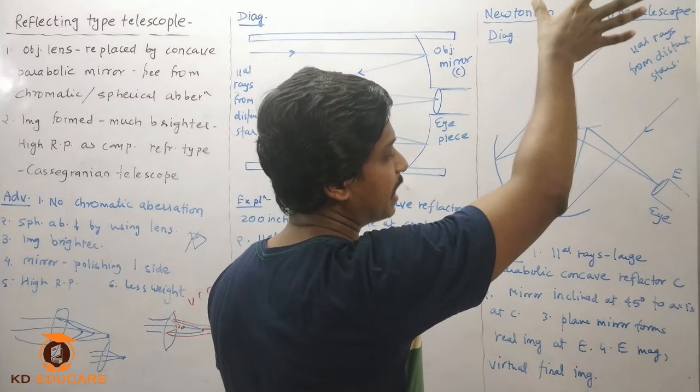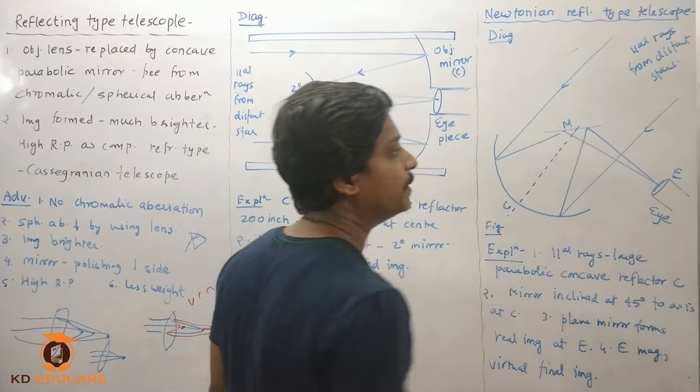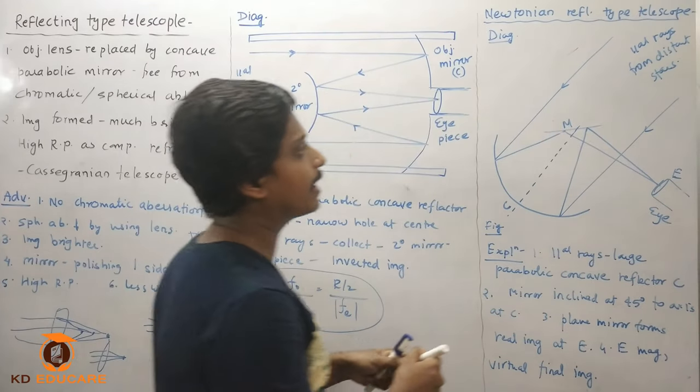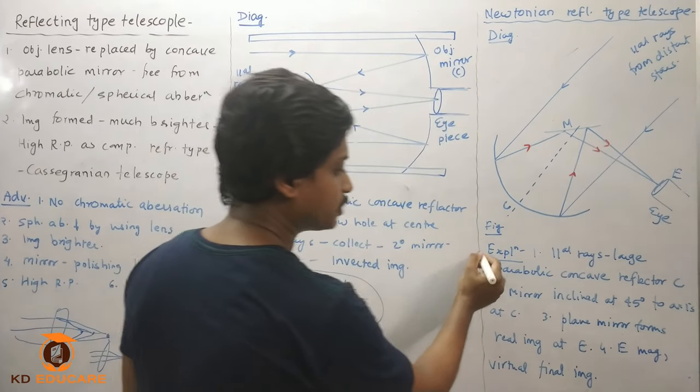The parallel rays from the distant star reflect at this point, and then go to the eyepiece. This will finally reach the eyepiece. Let's see the explanation.